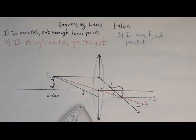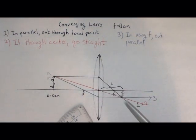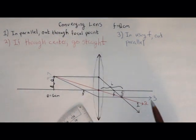What you need to know right now is how to draw these three rays: in parallel, out using the focal point; straight through the center; and then in through the focal point, out parallel. That concludes this video.